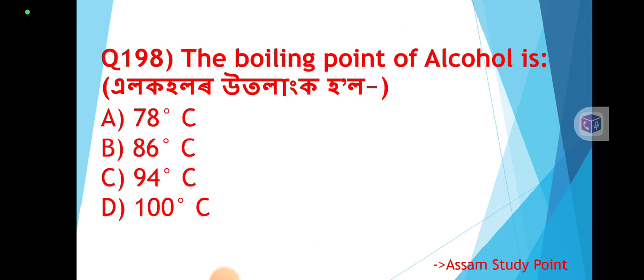Question 198: The boiling point of alcohol — alcohol lor utoloncohol. The correct answer is Option: 78 degrees Centigrade.